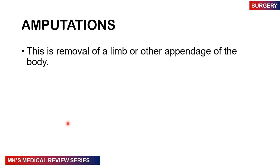Remember that amputation is the removal of a limb or an appendage from the body. You can amputate a digit, a whole hand, a toe, the foot, part of the foot, or the leg.